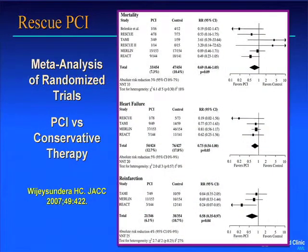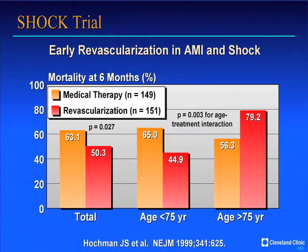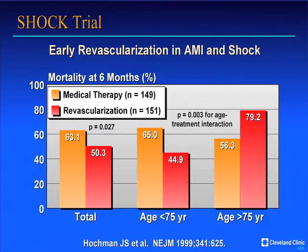For patients who fail fibrinolysis, so-called rescue PCI is supported by pooled trial data. In patients who appear to have failure of fibrinolytic therapy, there is benefit in terms of mortality, development of heart failure, and reinfarction — though at a somewhat increased risk of bleeding. Patients in cardiogenic shock also have particular benefit from reperfusion, even outside the typical six- to 12-hour window. The SHOCK trial showed an overall reduction in mortality, and shock is considered an indication for revascularization.